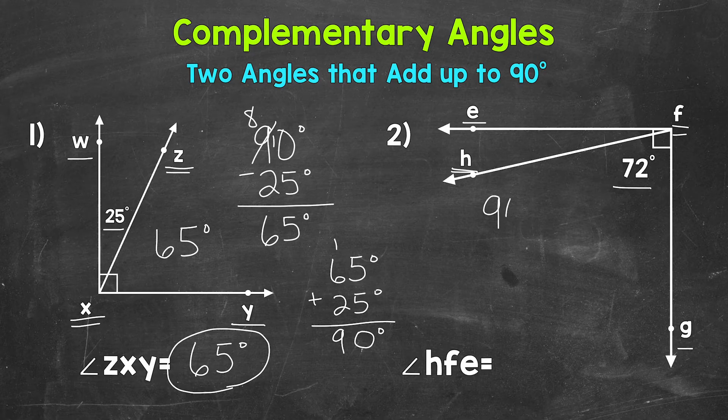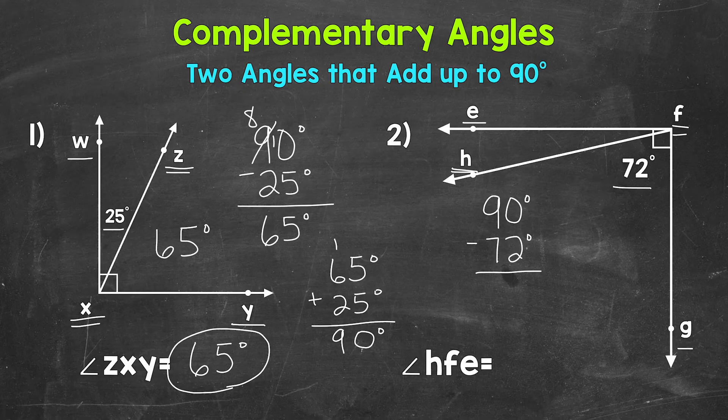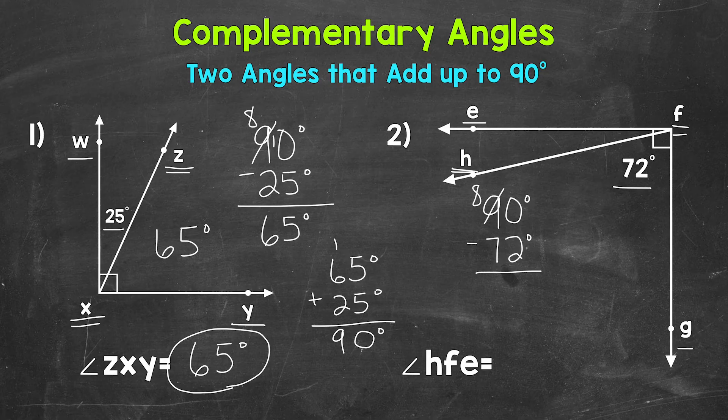So let's do 90 degrees. We have complementary angles here. So we know they are going to equal 90. And we are going to subtract the given angle measure. Now again, if you can figure this out mentally, that's great. That works. But if not, that's fine too. We can always write out a subtraction problem to find that angle. So we have 0 minus 2. Let's borrow. We have 10 minus 2, which is 8. And then 8 minus 7, 1. So our missing angle, angle HFE, is going to be 18 degrees.